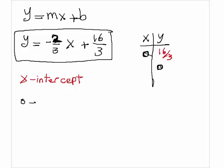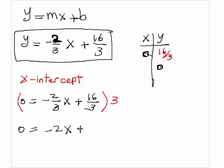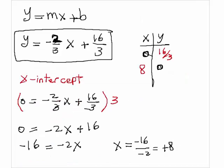We have 0 equals -2/3 x plus 16/3. The easy way to do this is multiply by 3 to get an equation without fractions. So we have 0 equals -2x plus 16. If I solve this, 16 goes to the other side, -16 equals -2x. So x must equal -16/-2, which is 8.